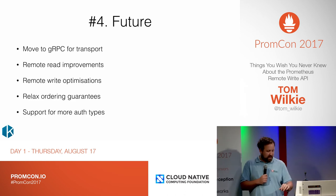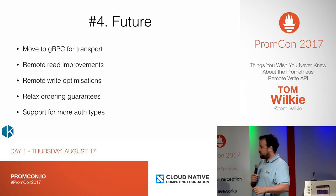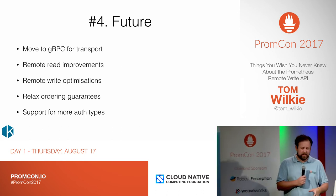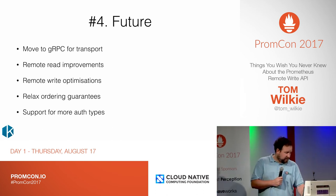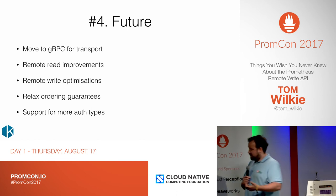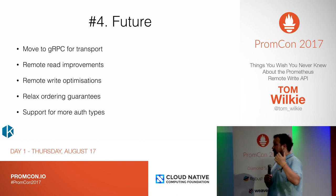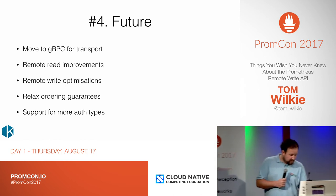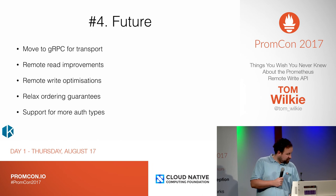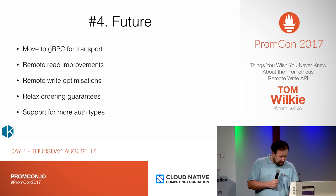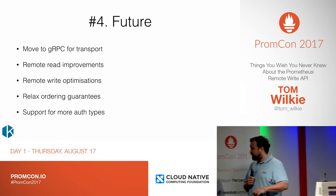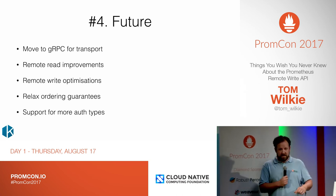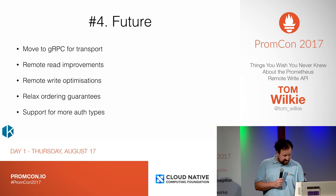In the future, we are considering moving to gRPC for the transport — this just means we have to write less code, and gRPC is cool. Remote read improvements: currently, the remote read path will block any queries if the endpoint is down, so we want to fix that and put timeouts on there. Also, the remote write path is a bit slow, and with Prometheus 2.0 it's probably slower than writing locally, which sucks. So I'm going to spend some time in the coming months optimizing that.